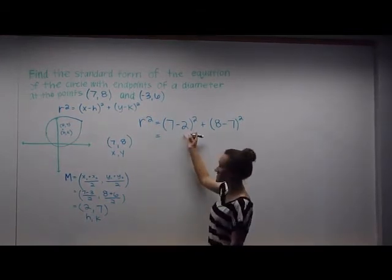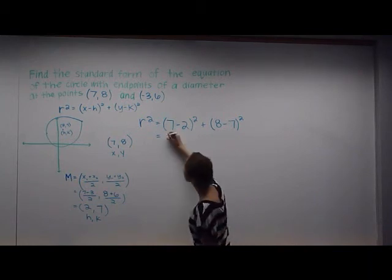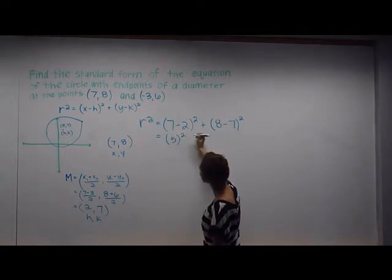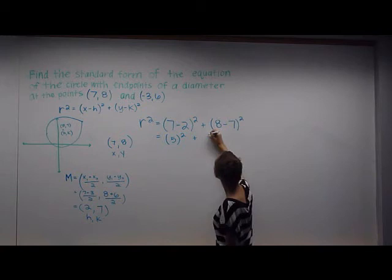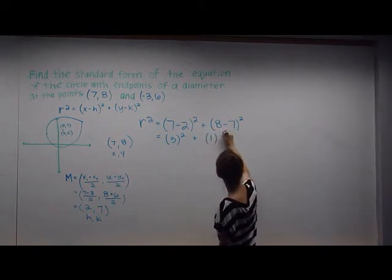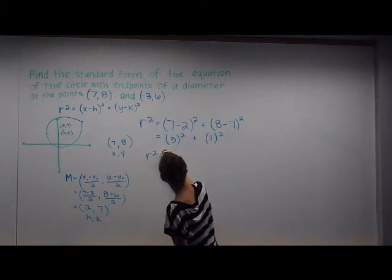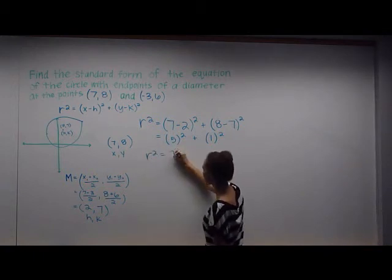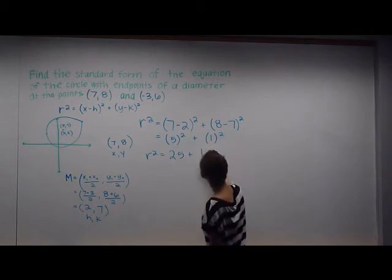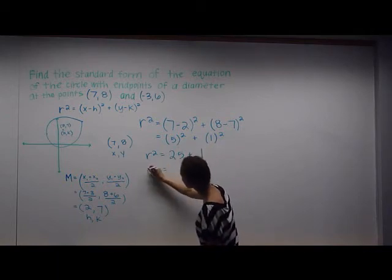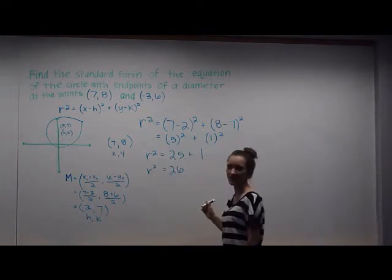Take the inside of the parentheses. 7-2 is 5 squared, plus 8-7 is 1 squared. So r² is going to be 5² = 25, plus 1² = 1, which gives you r² = 26.